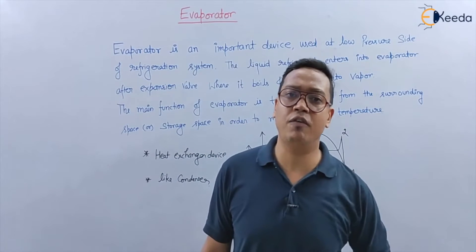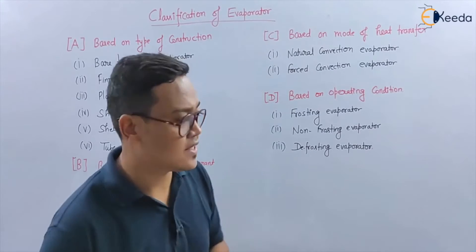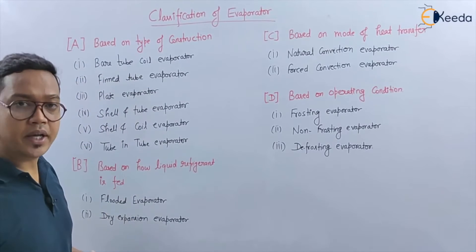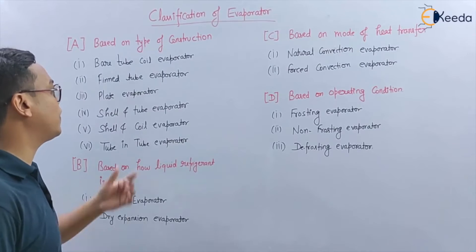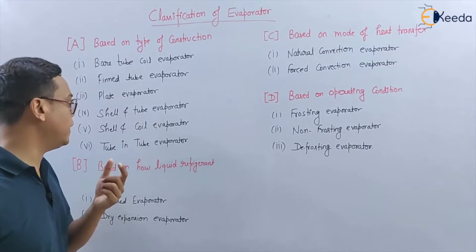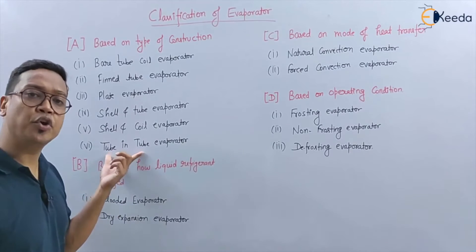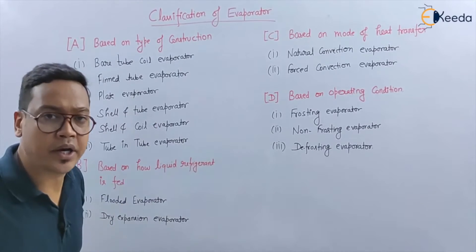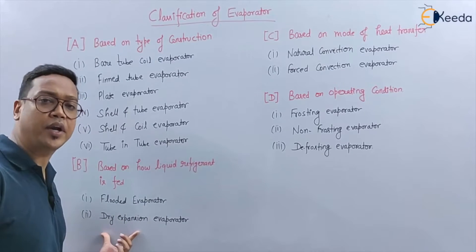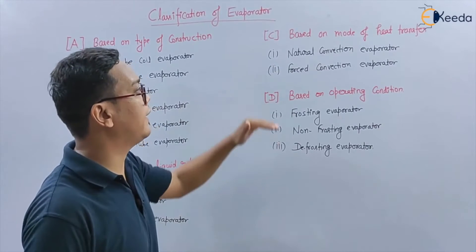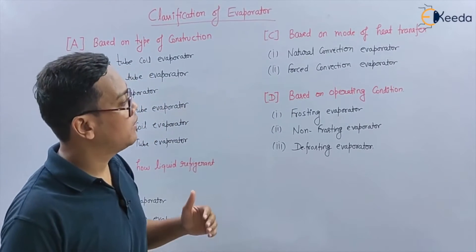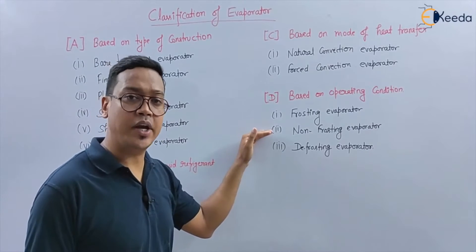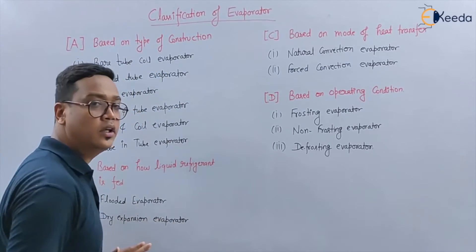Now let's see the classification of the evaporator. The first type is based on type of construction: bare tube coil evaporator, fin tube evaporator, plate evaporator, shell and tube evaporator, shell and coil evaporator, and tube in tube evaporator. The second type is based on how the liquid refrigerant is fed: flooded evaporator and dry expansion evaporator. The third type is based on mode of heat transfer: natural convection and forced convection. The fourth type is based on operating condition: frosting, non-frosting, and defrosting evaporator.